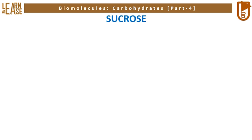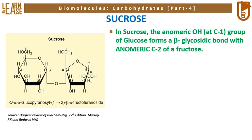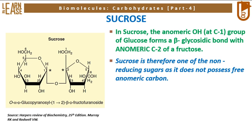I shall explain the structure of the non-reducing disaccharide, sucrose. The image on the left represents the structure of sucrose. The disaccharide possesses an alpha-glucopyranose residue and a beta-fructopyranose residue, linked by a beta-1,2 linkage. This structure is traditionally named as O-alpha-D-glucopyranosyl-(1→2)-beta-D-fructopyranoside. In sucrose, the anomeric OH at C1 of glucose forms a glycosidic bond with the anomeric C2 of fructose. Sucrose is therefore a non-reducing sugar as it does not possess a free anomeric carbon.